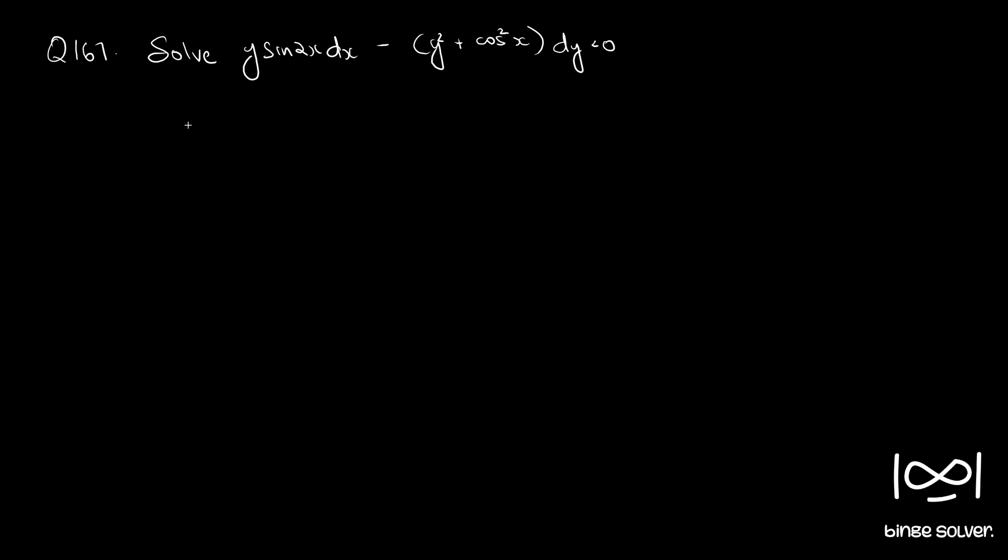The given equation is in the form M dx plus N dy. So to check whether the given equation is exact, we have to see whether the necessary and sufficient condition is met, which is ∂M/∂y equal to ∂N/∂x. So our M is y sin 2x and N is minus y square minus cos square x.